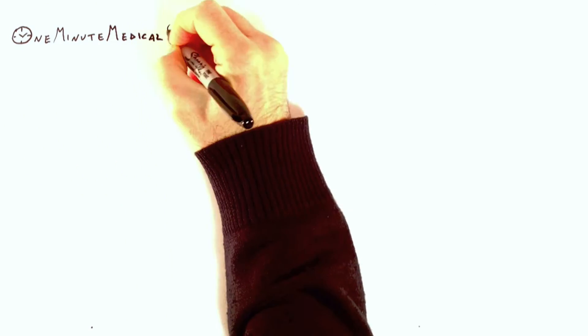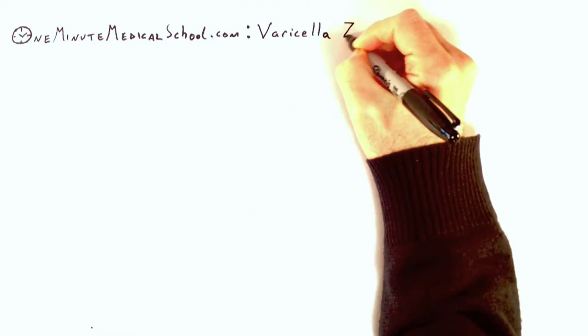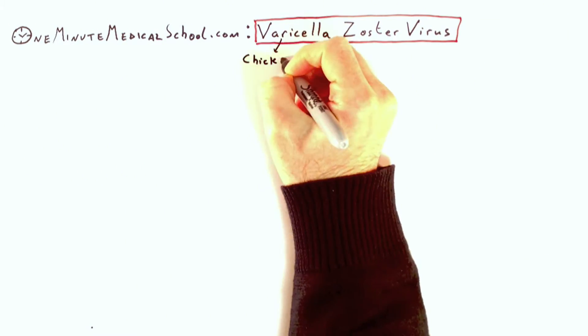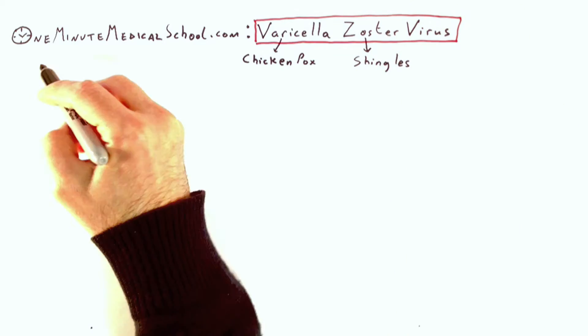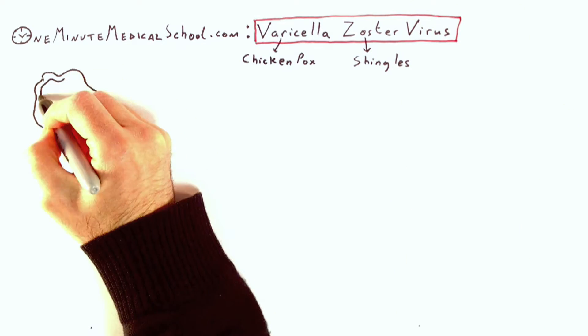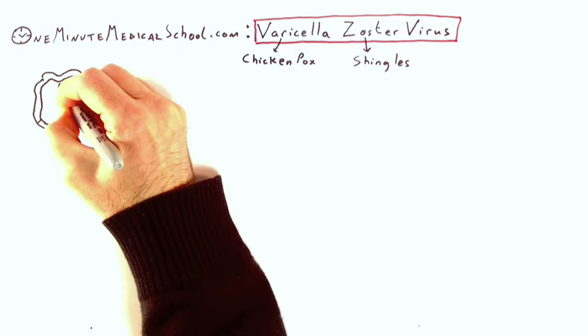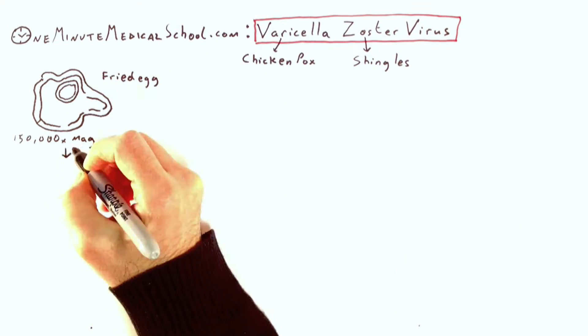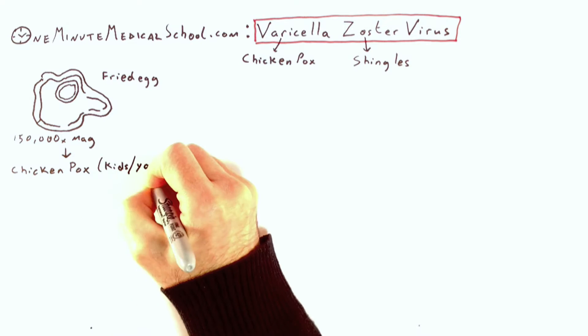A viewer asked what the connection is between chicken pox and shingles. They're both caused by the varicella zoster virus, which looks like a fried egg. It causes chicken pox in kids and young adults, but it doesn't die.